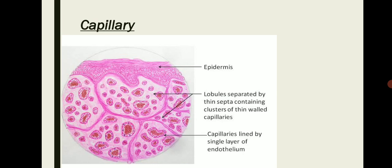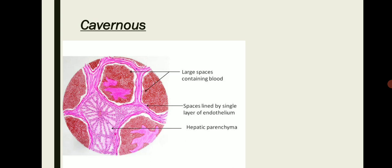Histologically, capillary hemangioma shows an epidermis with multiple lobules beneath it. These lobules contain capillaries with thin walls lined by a single layer of endothelium. The lobules are separated by thin septa. RBCs are visible inside the capillaries — that is how capillary hemangioma appears histologically.